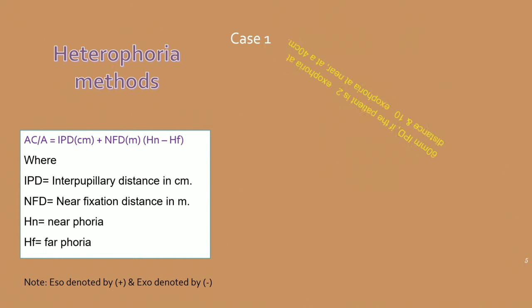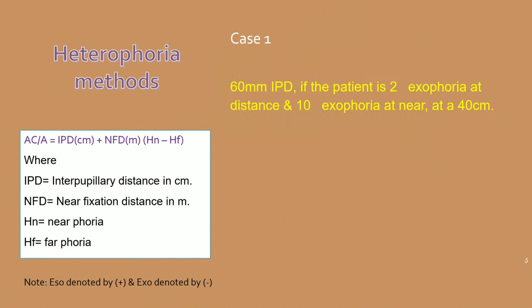Here is one example: 60mm of IPD. If a patient is 2 prism diopters of exophoria at distance and 10 prism diopters of exophoria at near at 40 centimeters, based on the formula we can put all the values and find out the AC/A ratio.